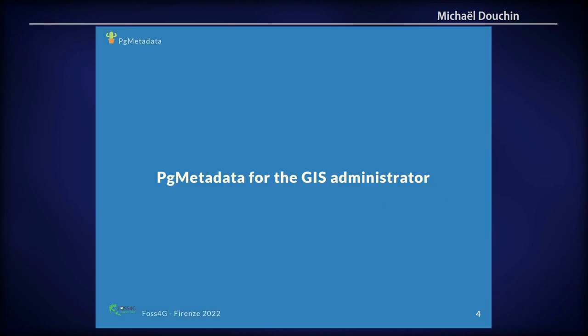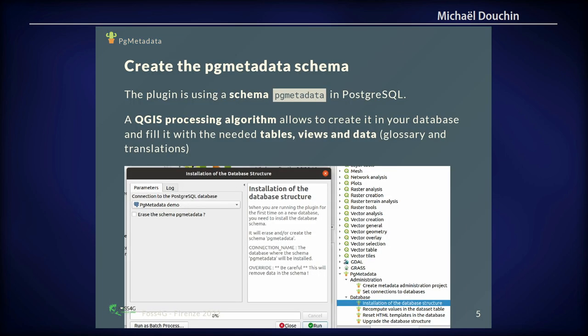I will present three ways of using PG metadata: as the GIS administrator, as the GIS user, and another one. First, as the admin, you need to create in your database the schema called PG metadata, which will store the needed tables, views, relations, and functions. We like to use QGIS processing algorithms, because you can use them from the processing toolbox, or the plugin can do that for you. It's a centralized way of creating data or doing some processing. You can use this algorithm and it will install the schema inside your PostgreSQL database.